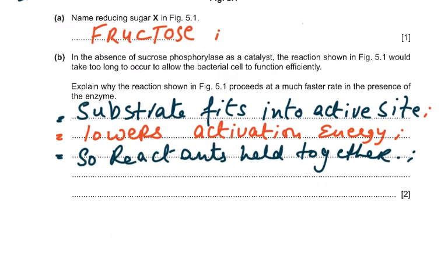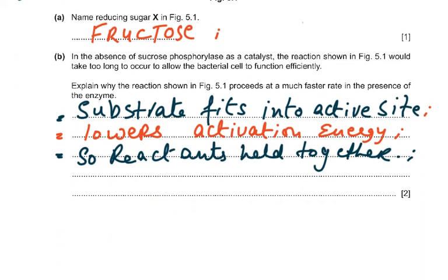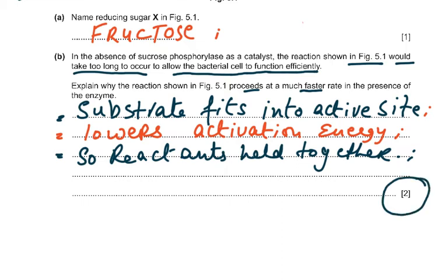In the absence of sucrose phosphorylase as a catalyst, the reaction shown in figure 5.1 would take too long to occur to allow the bacterial cell to function efficiently. The question asks: why does the reaction proceed at a much faster rate in the presence of the enzyme? Basically, it's asking what an enzyme does. It lowers the activation energy; the substrate fits into the active site, reactants are held together and the reaction proceeds.